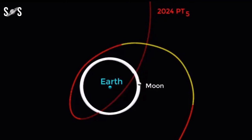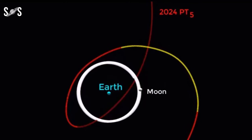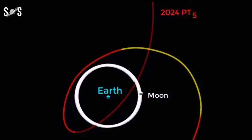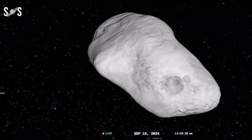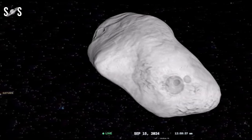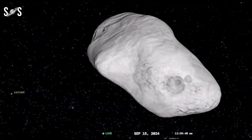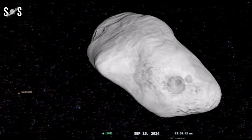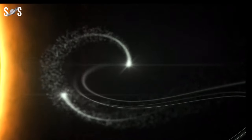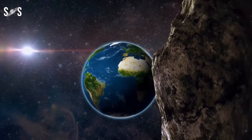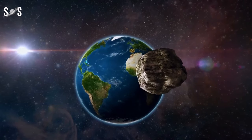These asteroids, due to their proximity and orbital patterns, are more likely to be caught in Earth's gravitational pull. Scientists have determined that 2024 PT5 is a natural object rather than space debris, which is significant because it means its trajectory is not influenced by the forces that affect artificial objects in space such as solar radiation pressure or atmospheric drag. This natural orbit makes it a perfect candidate for a temporary mini-moon.